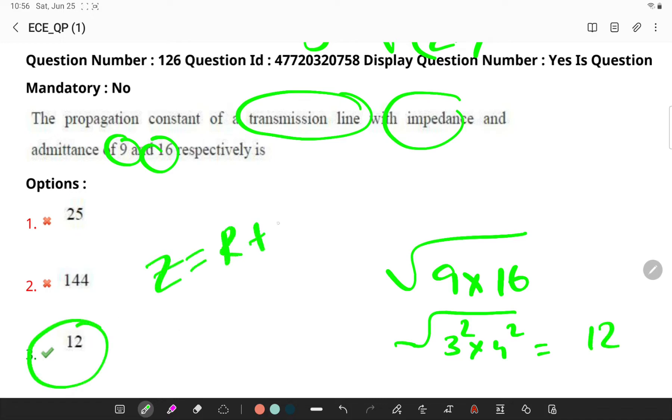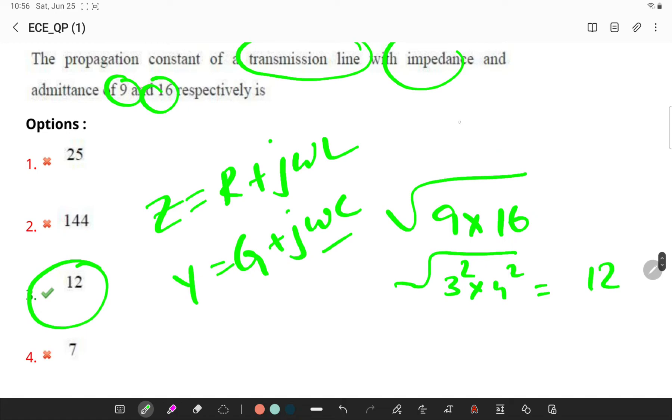So remember here Z is generally in the form of R plus j omega L and Y is generally in the form of G plus j omega C. So remember propagation constant formula, gamma is equal to square root Z into Y.